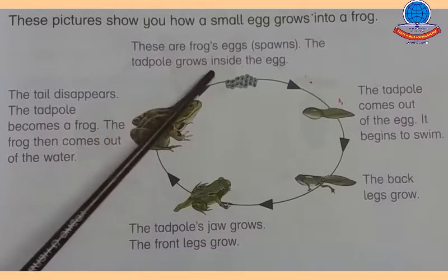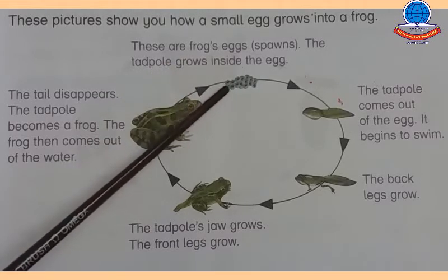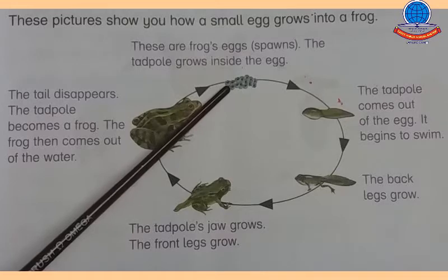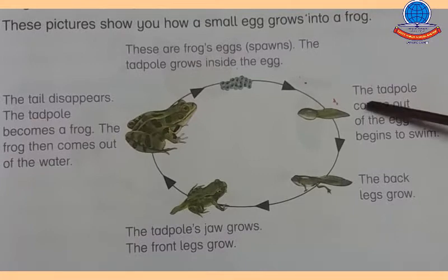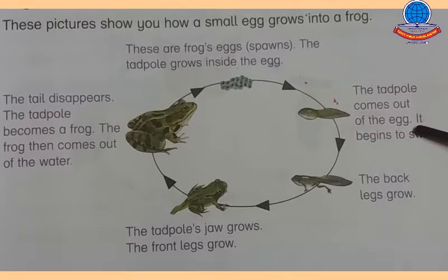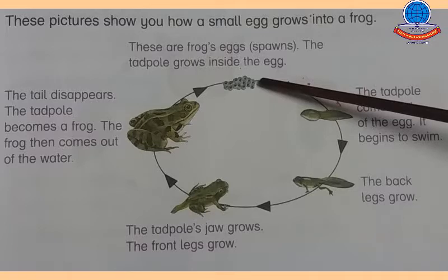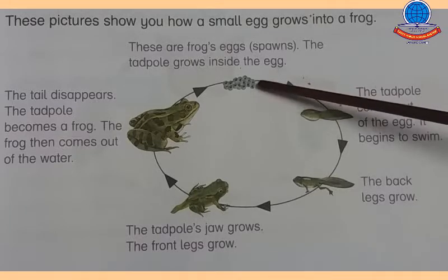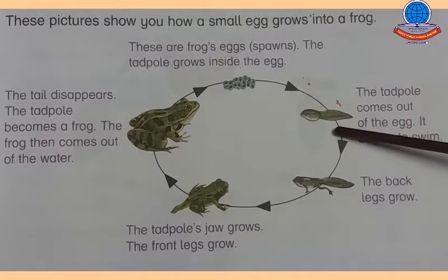First step: The tadpole grows inside the egg — tadpole in andon ke andar grow kar raha hota hai. Second step: The tadpole comes out of the egg and begins to swim — tadpole ande se bahar aata hai aur tairna shuru kar deta hai. Pehle step mein ande hote hain, uske baad second step mein ande se tadpole ban gaya.